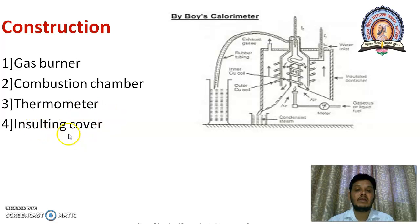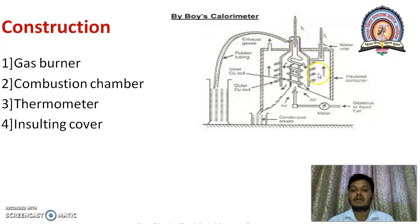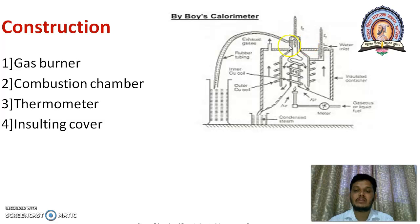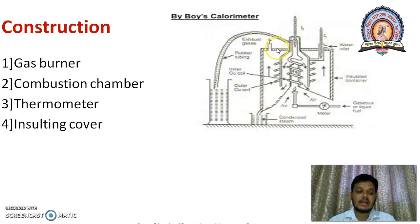The last part is the insulating cover. The whole assembly is covered with insulating material in order to isolate the combustion chamber. In the insulating cover, there are three holes. The first one is for exhausted gas — whatever gases are present in the combustion chamber are passed through the exhaust. The second one is for condensed steam, to collect the steam. And the third hole is required for water inlet. This is the simple construction of Boyce gas calorimeter.